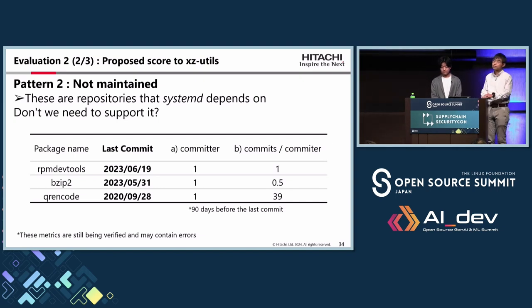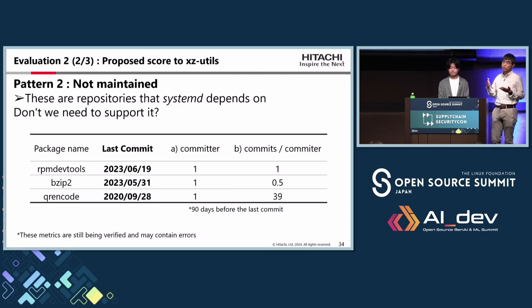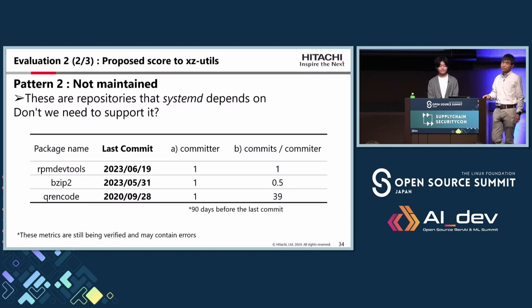Second audience question: Have you approached the working group responsible for Scorecard with these suggestions? Response: Not yet — we are still discussing how these metrics fit into the Scorecard architecture. If we agree on the approach, we would like to discuss it with the working groups. The questioner noted it is probably a good idea to involve them early, as they are helpful people.